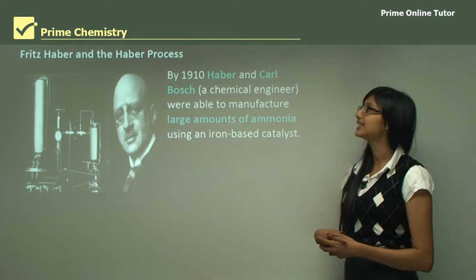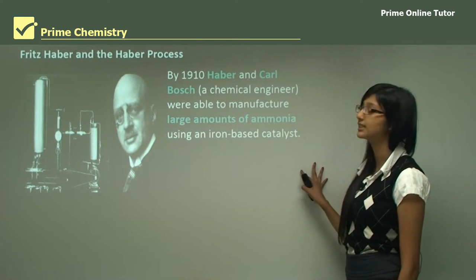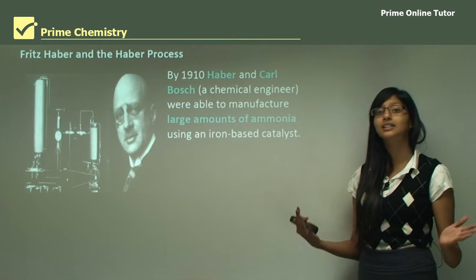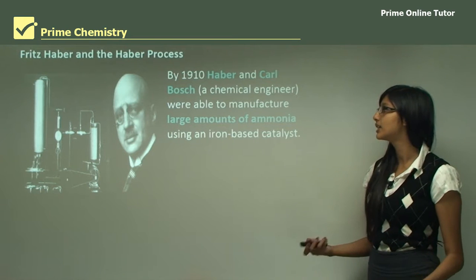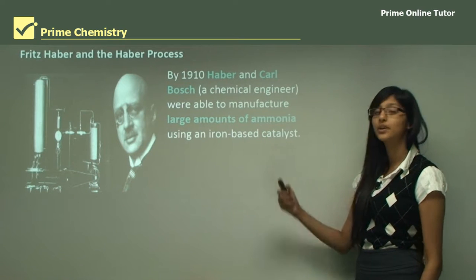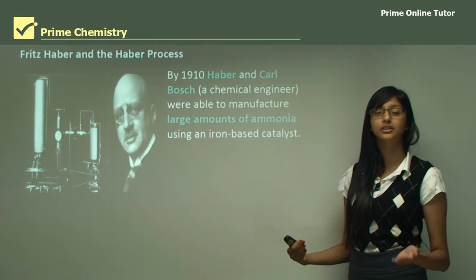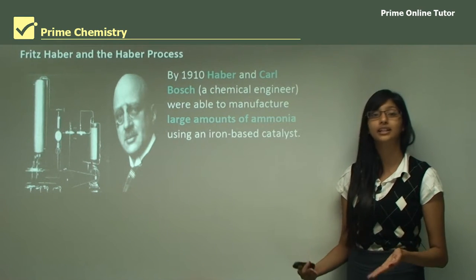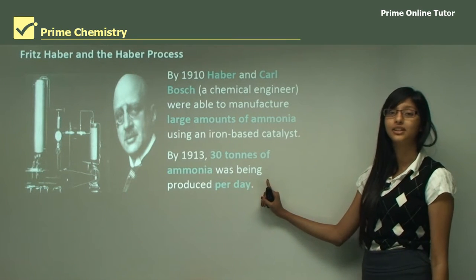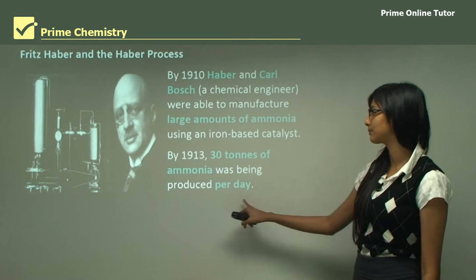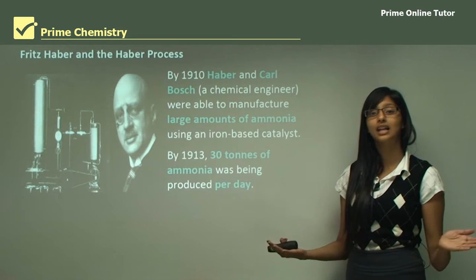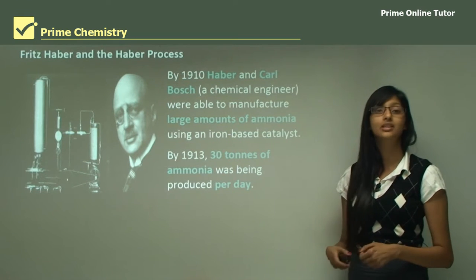By 1910, Haber and another scientist, Carl Bosch — also a chemical engineer — were able to manufacture a large amount of ammonia using an iron-based catalyst, producing enough to be used by consumers and making it economically viable. By 1913 they could produce 30 tons of ammonia per day, which was definitely economically viable.